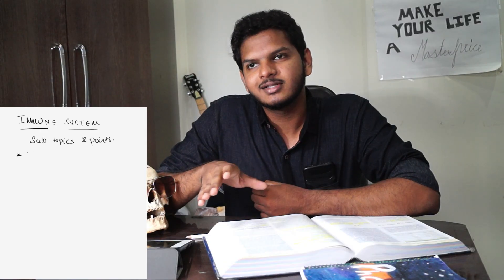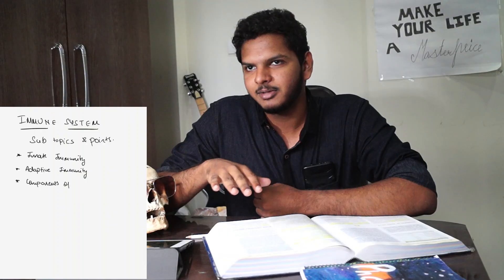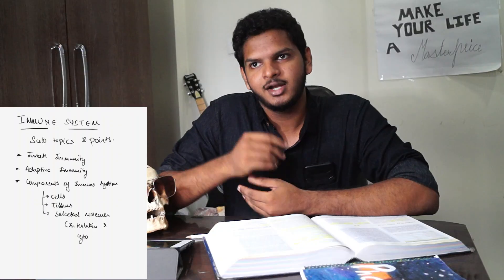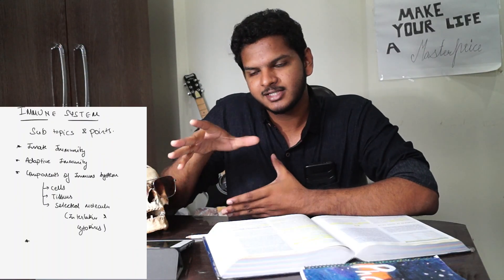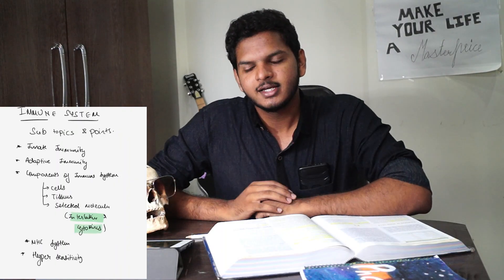Starting with phase one: you select a topic you want to study. Let's say I want to study immunology in pathology, so I find the best book — let's say Robinson Cotran. I open the chapter on immunology, and the first thing you have to do is identify key terms like cell-mediated immunity, humoral immunity, or adaptive immunity. Those are your main headings, and you classify your notes on the basis of those headings, so covering small pieces means you end up covering the entire topic.